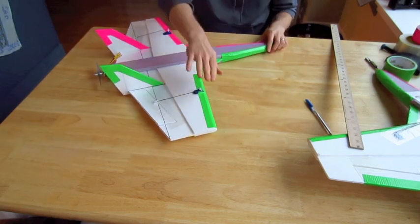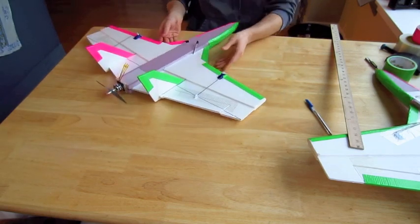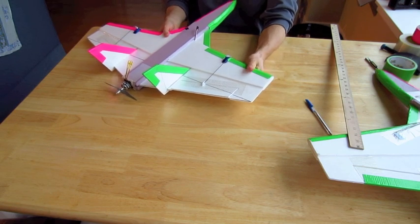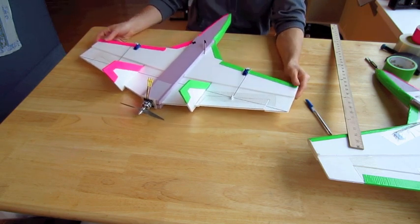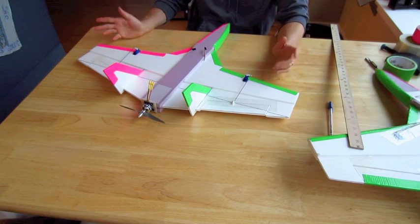I added tape along the leading edge, which I recommend you do. You don't have to use colored. I like that for orientation, but it helps strengthen the leading edge just in case you crash or something like that.